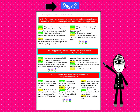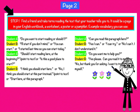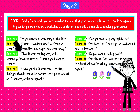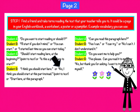Page two. Step one: Find a friend and take turns reading the text that your teacher tells you to. It could be a page in your English workbook, a worksheet, a poster, or a pamphlet. Example vocabulary you can use: Do you want to start reading or should I? I'll start if you don't mind. Or: You can start. Or: I started last time, so you can start today. Should I start reading here at the beginning? Or: Is this a good place to start? I think you should start here. Or: No, I think you should start at this part instead.